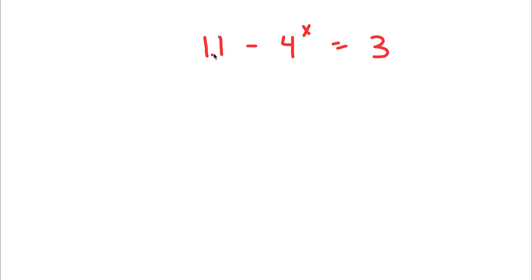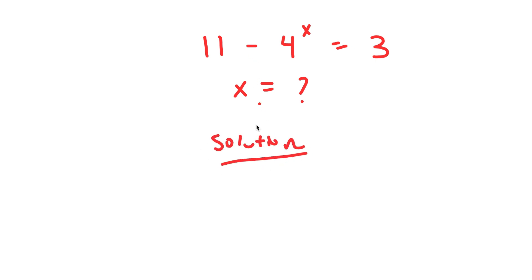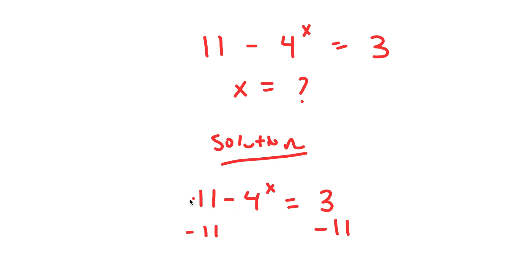In this problem, I have 11 minus 4 to the power of x is equal to 3, and I want to find the value of x. Starting with 11 minus 4 to the power of x is equal to 3, the 11 and negative 11 are going to cancel out, and I'm going to be left with negative 4 to the power of x is equal to 3 minus 11.